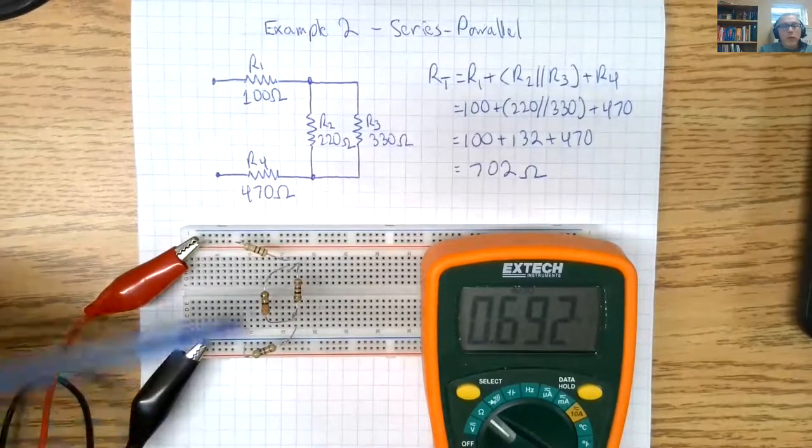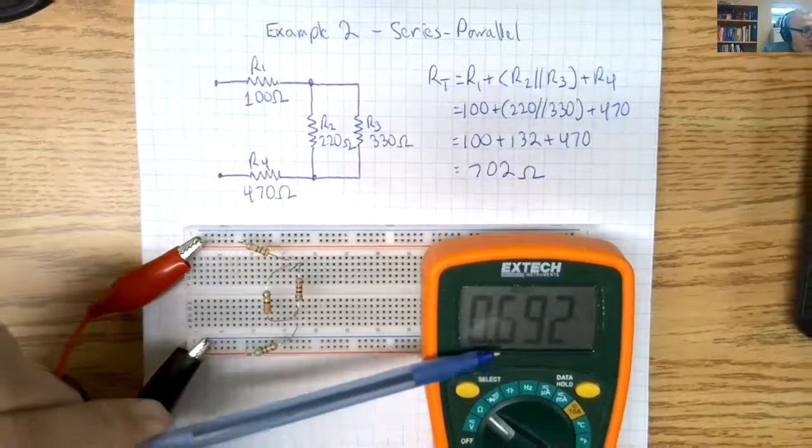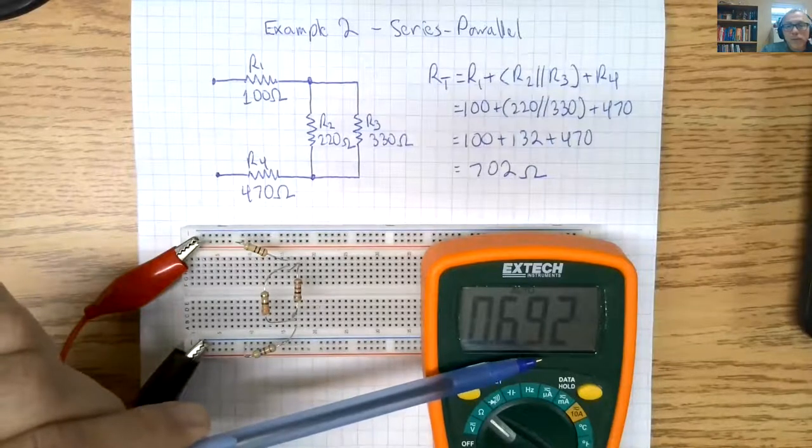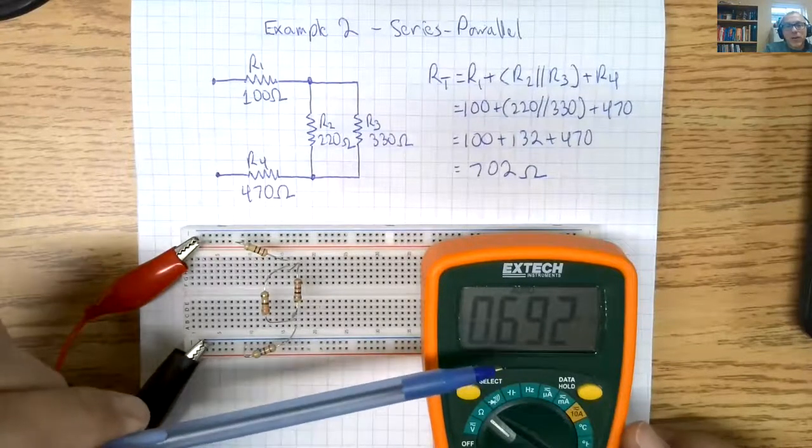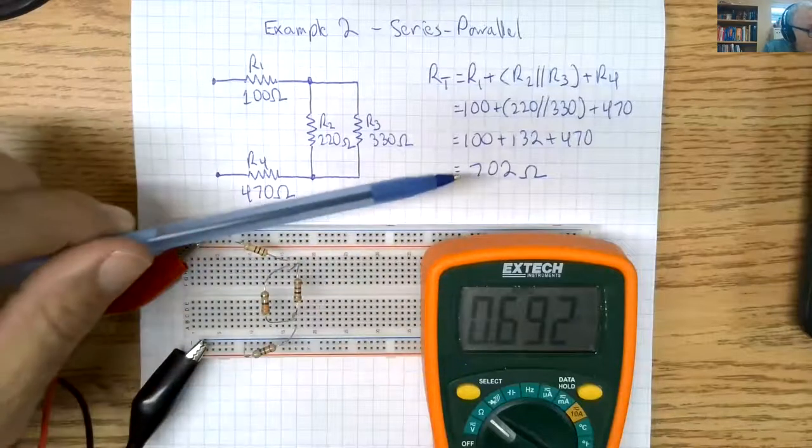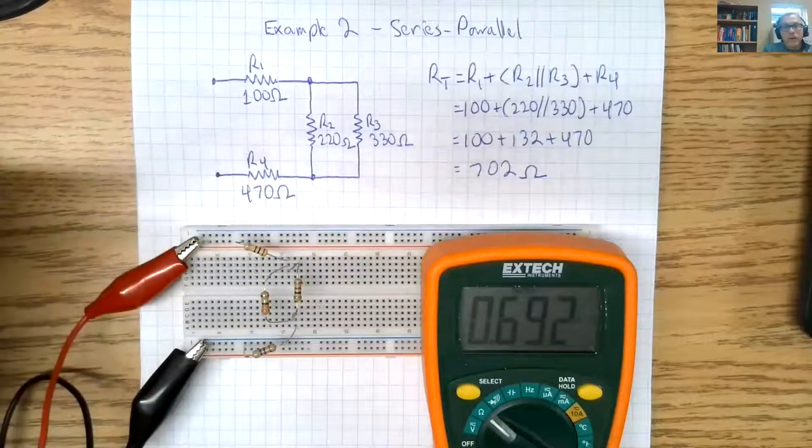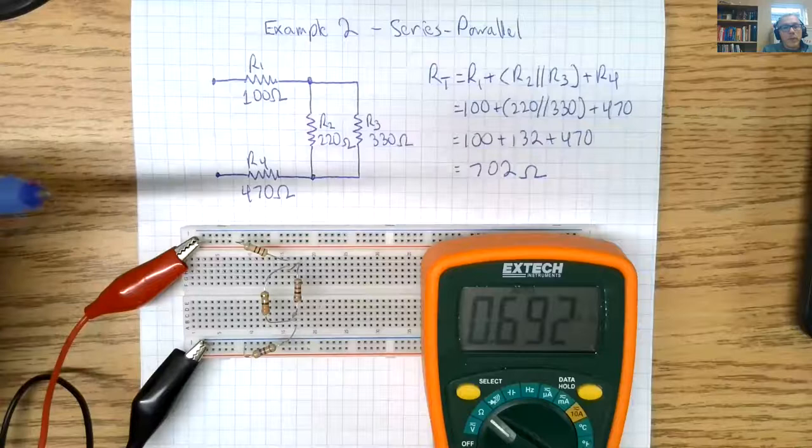So the circuit I have connected here, I have 692 ohms. It says 0.692K so it's 692 ohms. 692 is within the 5% tolerance of 702.